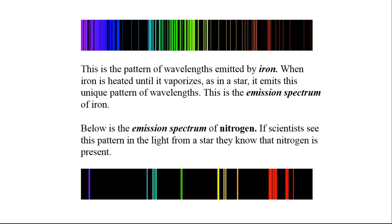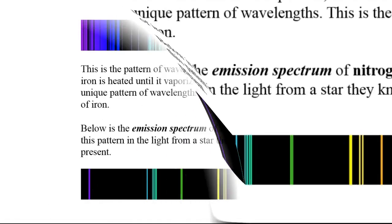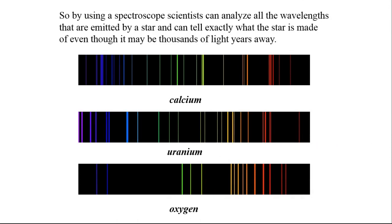If scientists see this pattern in the light from a star, they know that nitrogen is present. So by using a spectroscope, scientists can analyze all the wavelengths that are emitted by a star and can tell exactly what the star is made of, even though it might be thousands of light years away.